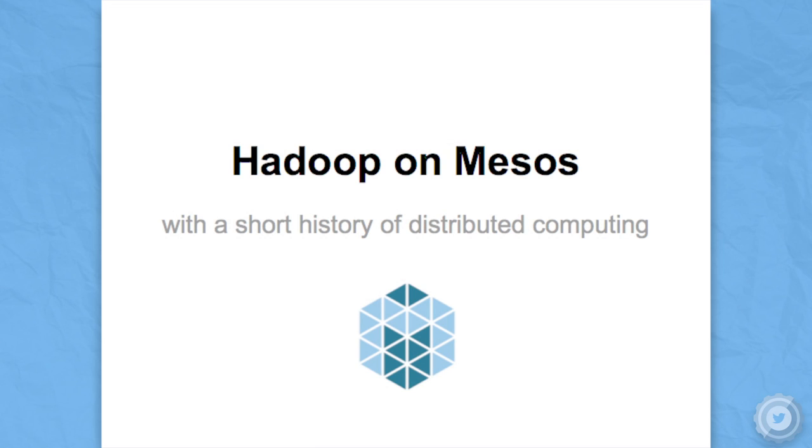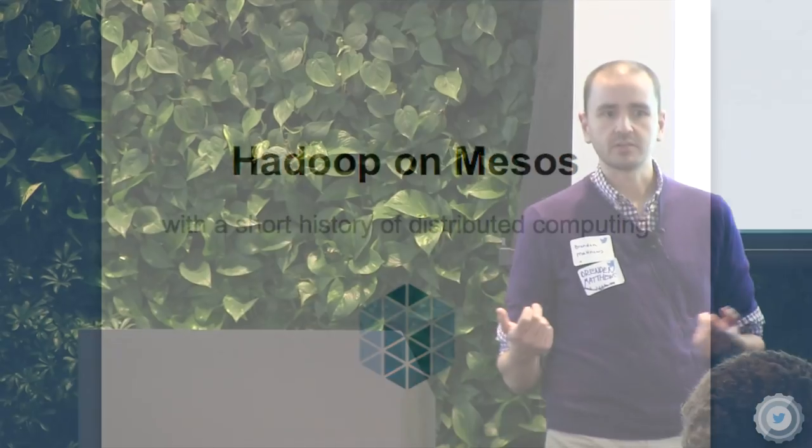I'm going to talk a little bit about myself really briefly. I'm going to dive into some background, a bit of the history of distributed computing. Then I'm going to discuss the details to a limited degree of Hadoop on Mesos. Then I'm going to talk about a case study of how we use Mesos at Airbnb, some final thoughts, and then questions at the end.